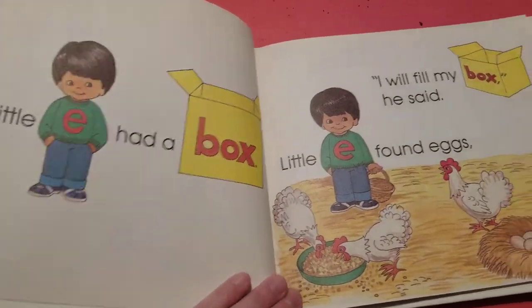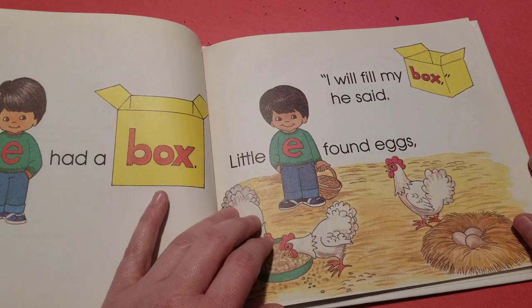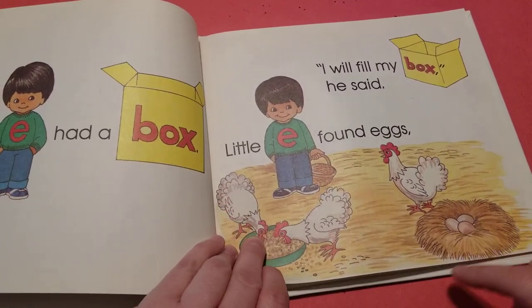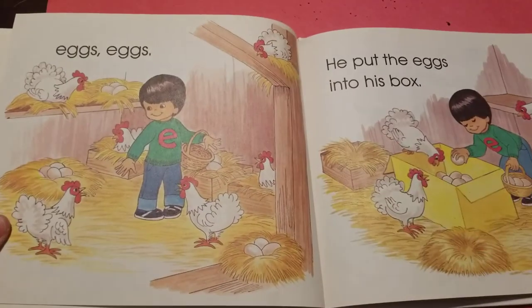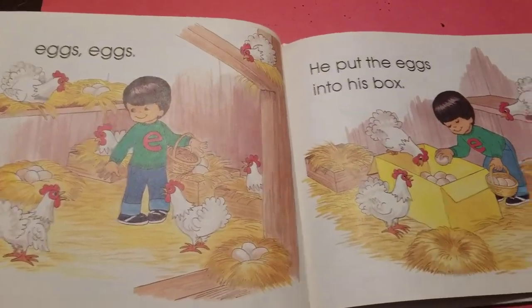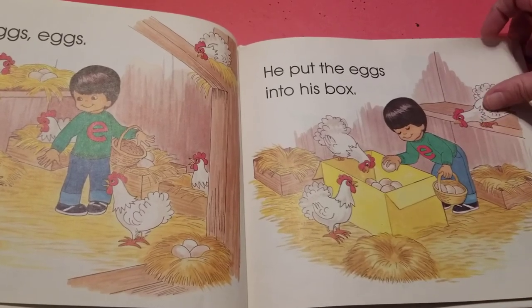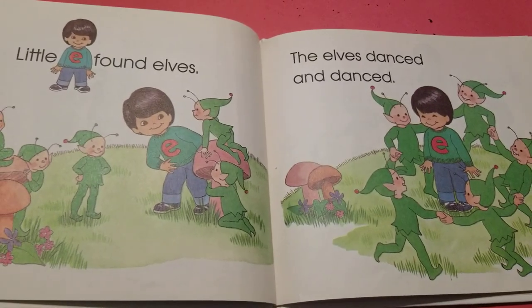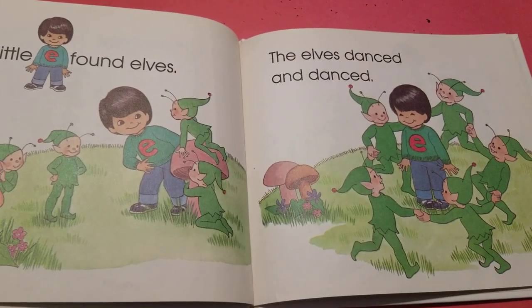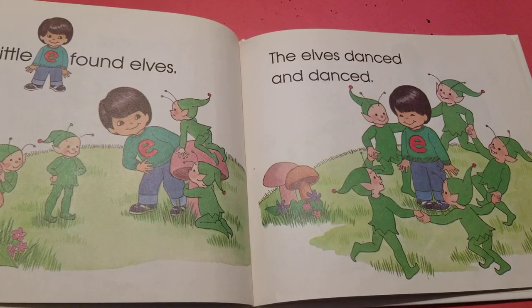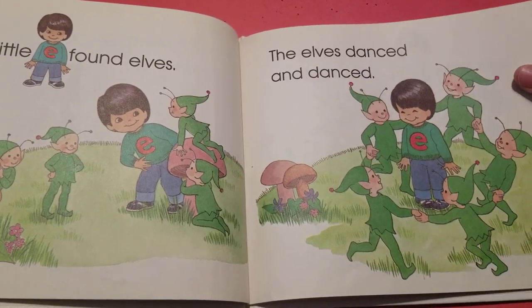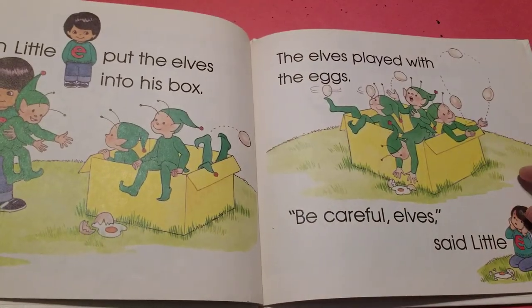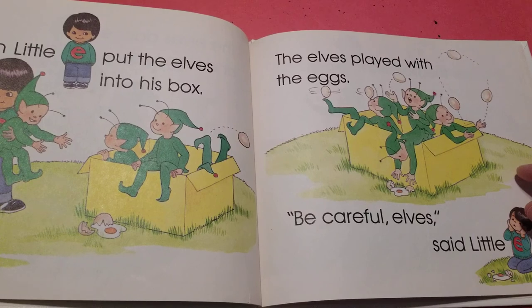Little E had a box. I will fill my box, he said. Little E found eggs. Eggs, eggs. He put the eggs into his box. Little E found elves. The elves danced and danced. So eggs and elves both start with that eh, eh, E sound.